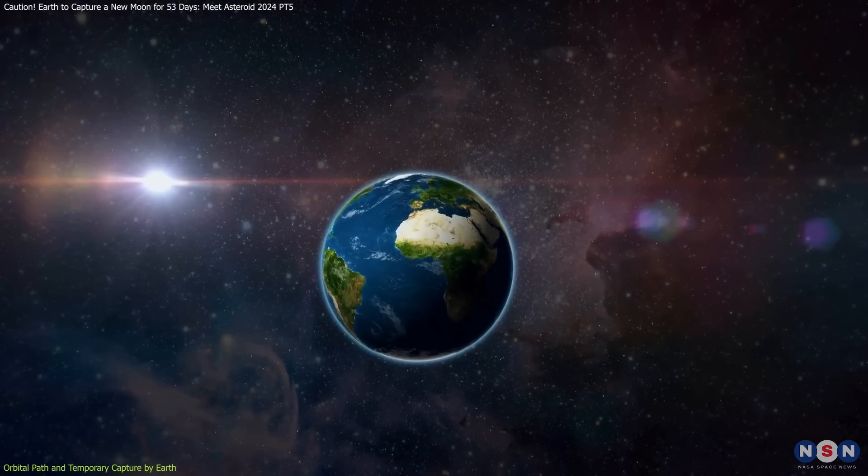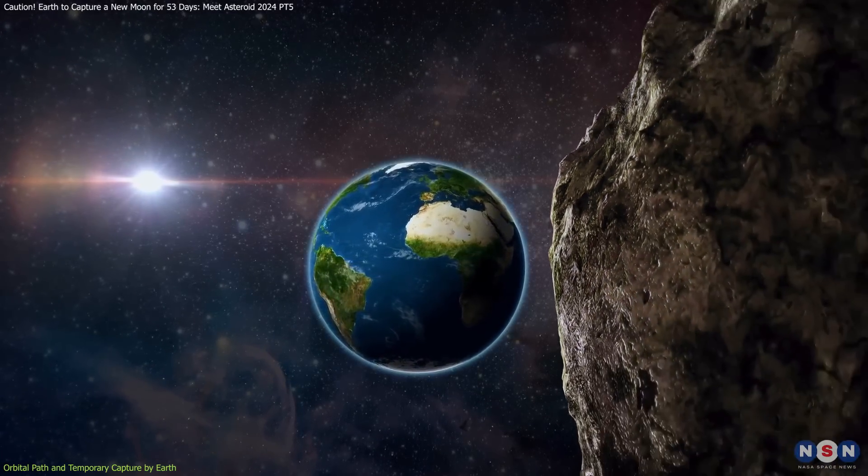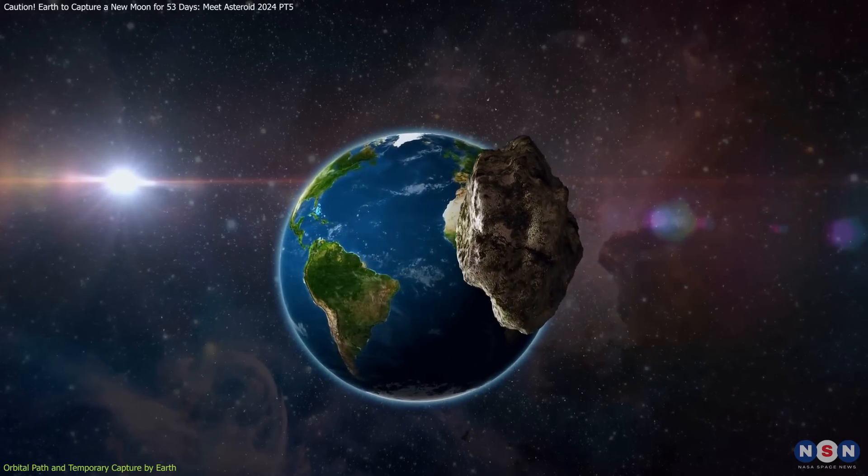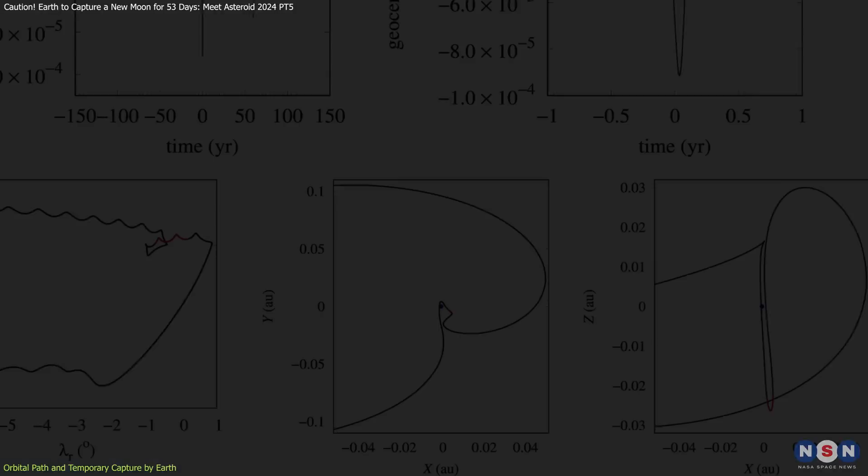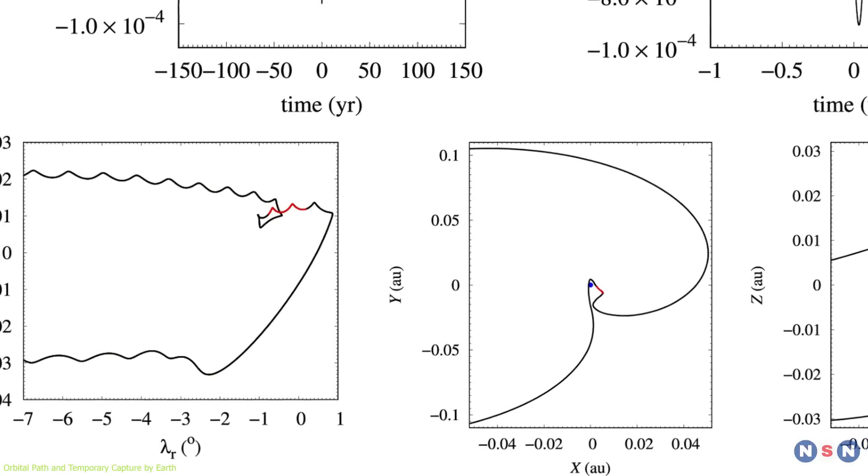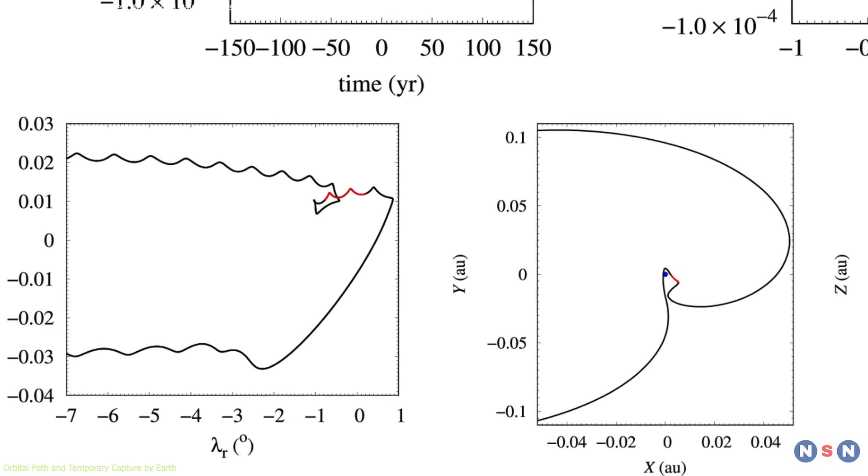For 2024 PT5, the current predictions suggest that it will be captured by Earth's gravity at the end of September 2024, make a single loop around our planet, and then slingshot back into its orbit around the sun by mid-November.